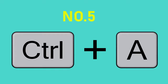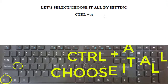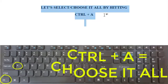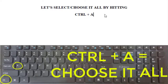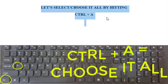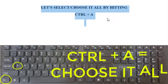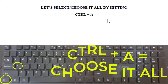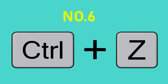Number 5: CTRL and A — Select All. When we selectively choose something, we hold and drag with the left mouse click. But to choose everything, just hold CTRL and A. This A is not for apples — A is for all. All means everything. So CTRL and A is to select all.